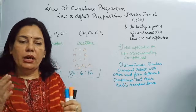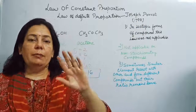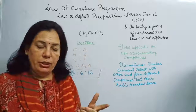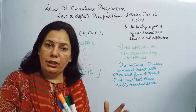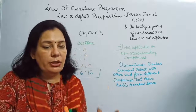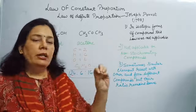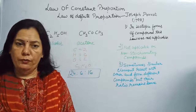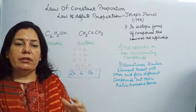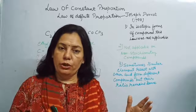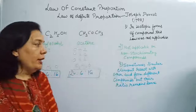So children, according to Joseph Proust in 1799, in a chemical compound, elements are present in a fixed ratio by their mass. Its applications gave the idea of molecular compounds and ionic compounds — that in molecular compounds the ratio of elements is fixed, and in ionic compounds the ratio of ions is fixed. These are some of the limitations of this law. Now let us come to the numerical aspect.